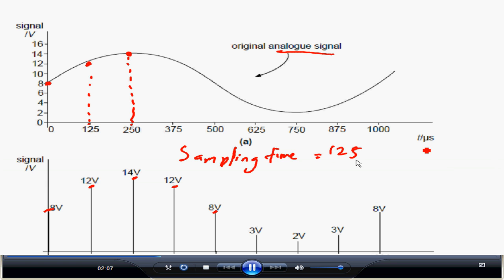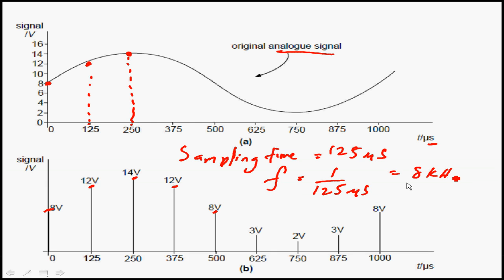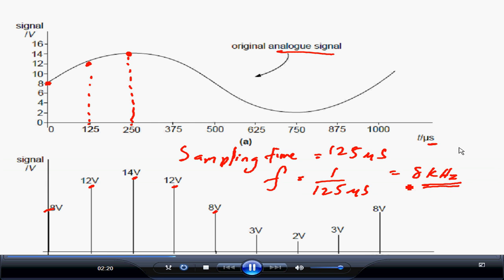The sampling time is 125 microseconds, which means the sampling frequency is 1 over 125 microseconds, giving 8 kilohertz. So we use 8 kilohertz sampling in this case.